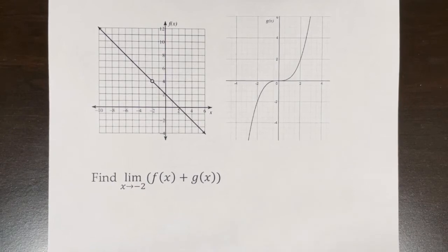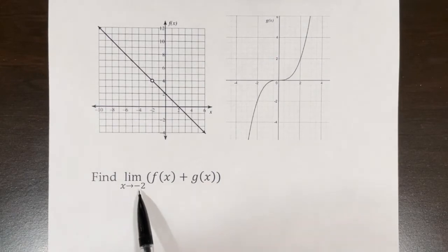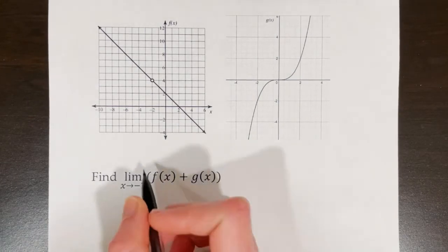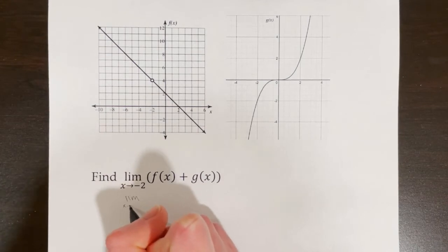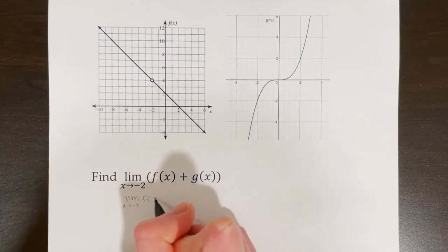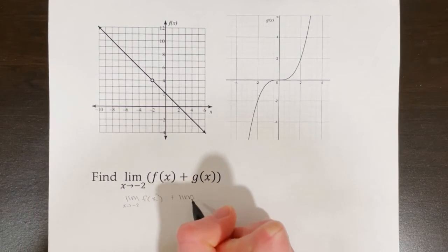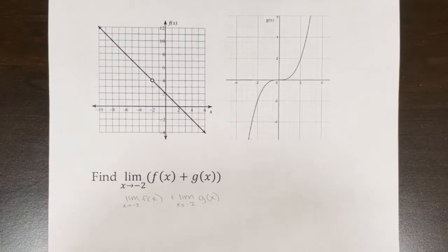This video is a continuation of Lesson 1.5. To find the limit as x goes to negative 2 of f(x) plus g(x), we will first use our limit properties to split this into two separate limits. This will become the limit as x approaches negative 2 of f(x), plus the limit as x approaches negative 2 of g(x).